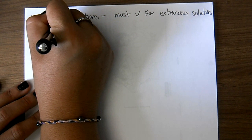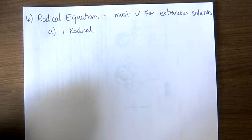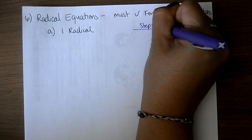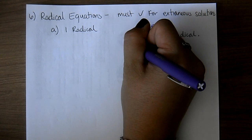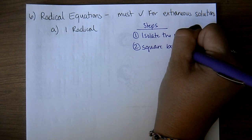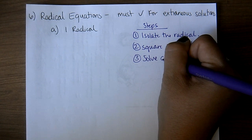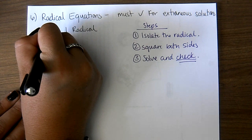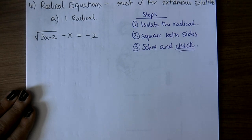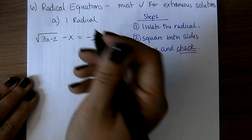There are a couple of situations you could encounter. One is when you only have one radical. The steps for one radical are: first, isolate the radical — get it all by itself on one side. Second, square both sides. Third, solve and check. You always have to check these solutions. So let's try an example: the square root of 3x minus 2 minus x equals negative 2.